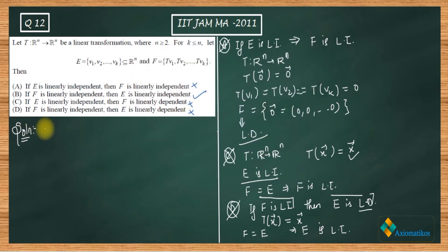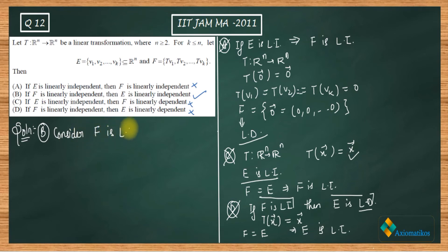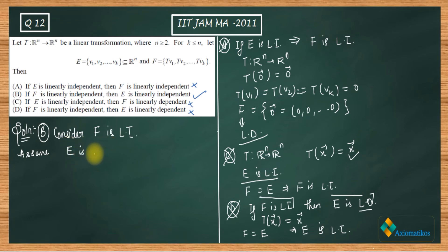Now let us write the proof for option B. We are given that F is linearly independent, and we need to show that E is linearly independent. To prove this, I will use proof by contradiction and assume that E is linearly dependent.